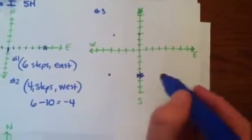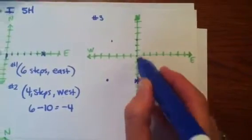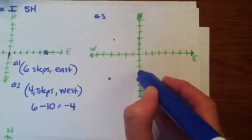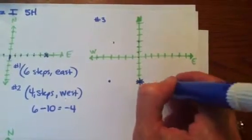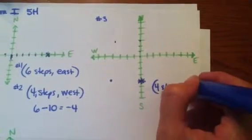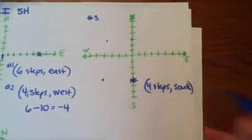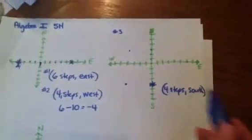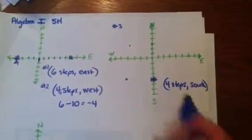It says give the resultant vector. Well, how far are you from the origin? 1, 2, 3. You are four steps from the origin. And which direction are you from the origin? You are south. That's all they're wanting right there. Four steps south.